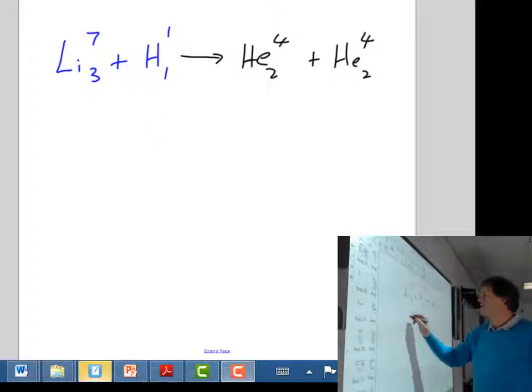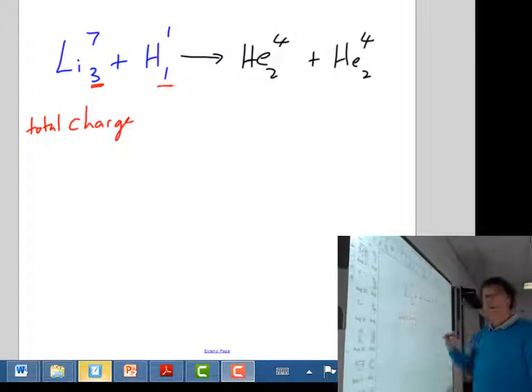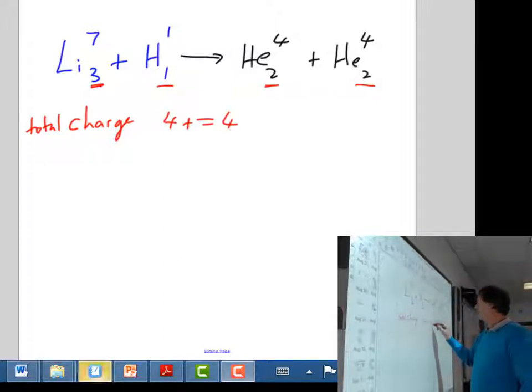So what's conserved in this reaction then when you look at it? What's always conserved? The first thing that's conserved is the number, is the charge. The total charge has to stay the same before and after the reaction. So if you check this out here, you've got a charge of plus 3, plus 1, that's 4. Here you've got 2 and 2. Yes, it's conserved. 4 is equal to 4 before and after the reaction. Charge is conserved.